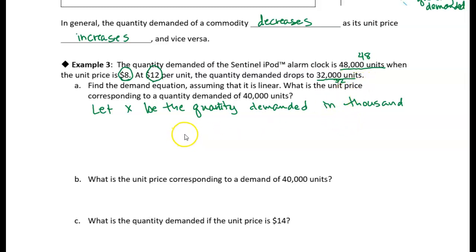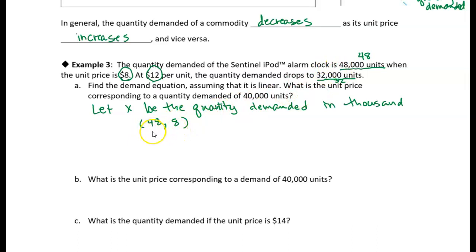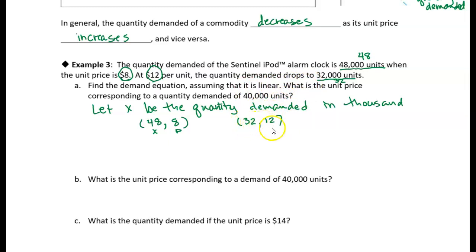We're essentially given two points. When the price is $8 — that's our y-coordinate P — the demand is 48,000, so the first point is (48, 8). The other point is when the price is $12 per unit, and the demand drops to 32,000, so the second point is (32, 12). We keep in mind that x is in thousands.